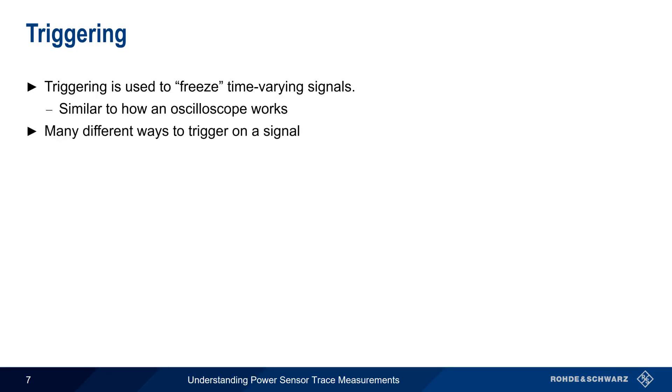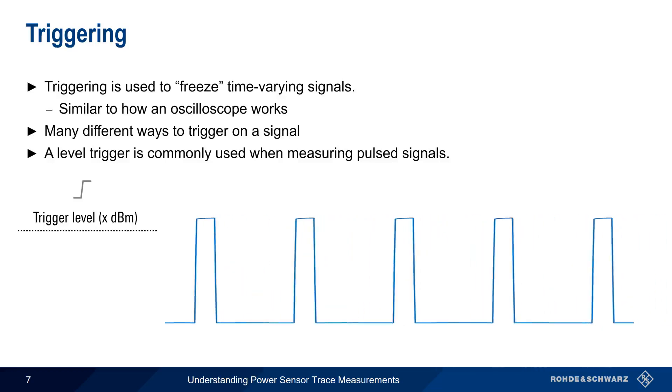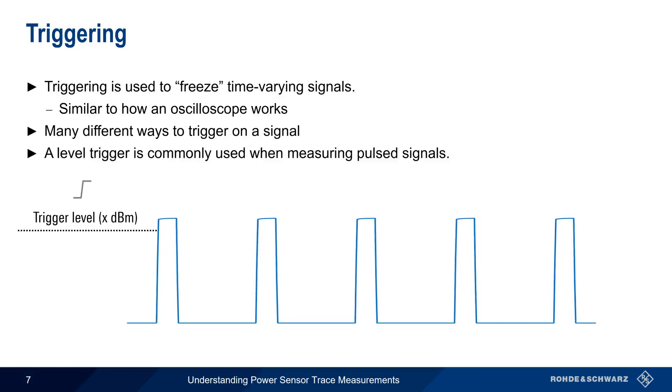Triggering can be done in different ways, including using an external signal as a trigger, but a level trigger is the most commonly used method when measuring pulse signals. We specify a trigger level with a certain power, and whether or not we're triggering on the rising or falling edge of the signal. When the measured signal meets or exceeds this level, the trigger is activated, and we have a stable signal that we can measure.